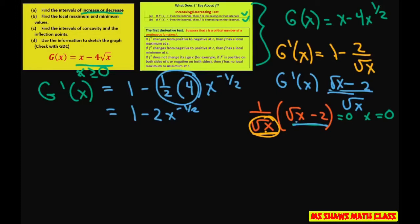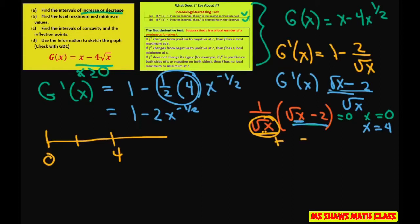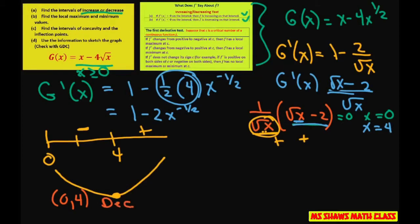Now let's do a sign chart from 0 to 4. We have to start at 0 since we can't go less than 0 in the real number system. If I plug in 1, I get a positive times a negative, so that's negative. If I plug in 5, it's positive times a positive, so that's positive. That means it's decreasing from 0 to 4 and increasing from 4 to infinity.